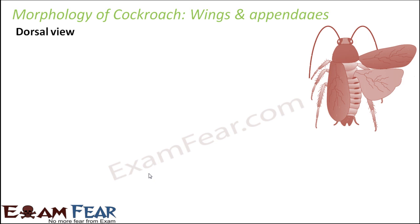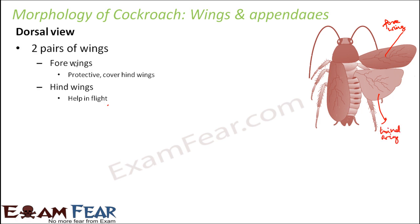This is the dorsal view of the cockroach, that is the view from the backside. The wing present towards the anterior end is the forewing, and the one towards the back is the hind wing. Two pairs of wings are present. The forewings are protective and cover the hind wings. Both are flattened here, which is why you can see both of them.